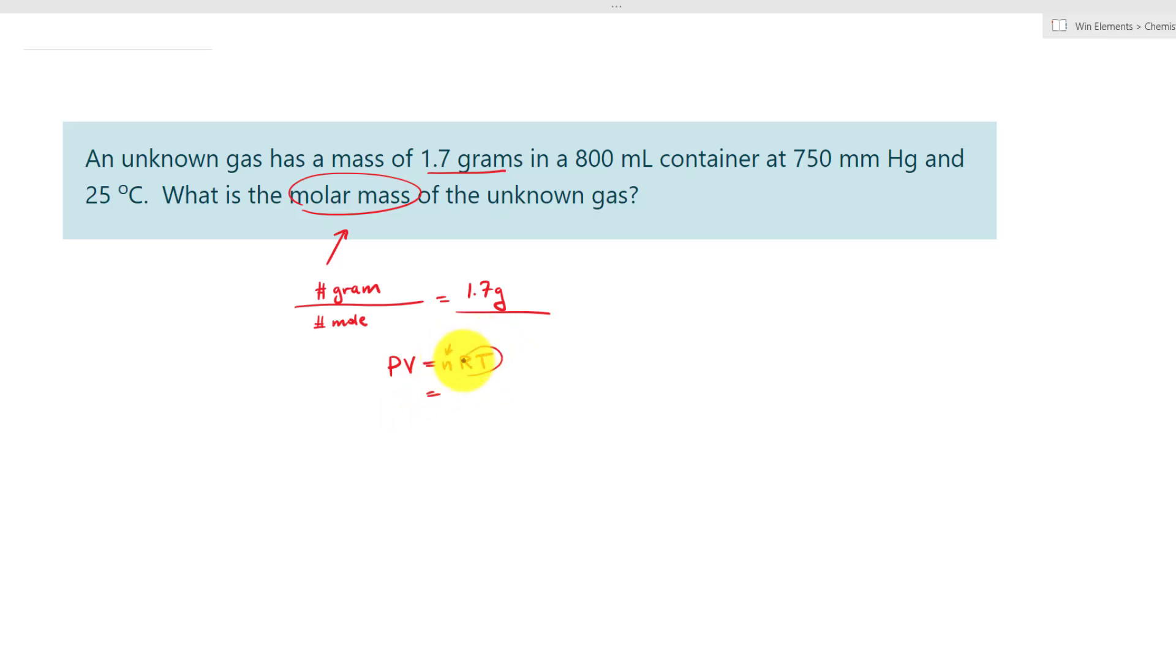Now n is your number of moles. So what we have is n equal to PV divided by RT. But before we plug in the values of each variable directly from the problem, we have to convert them first.